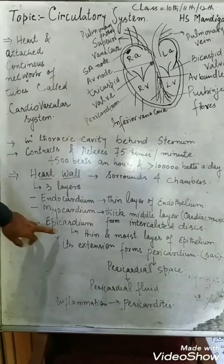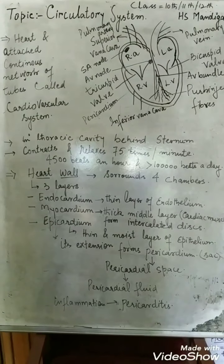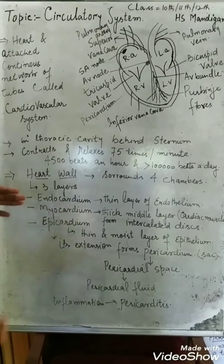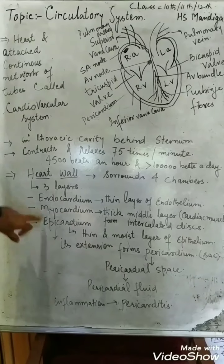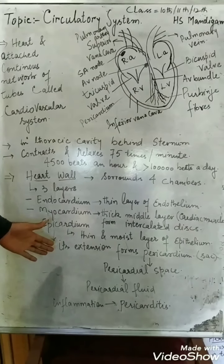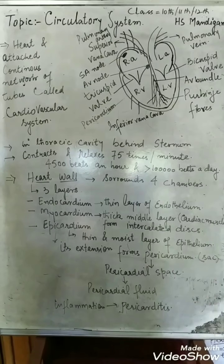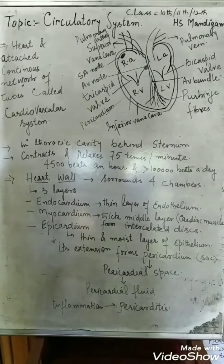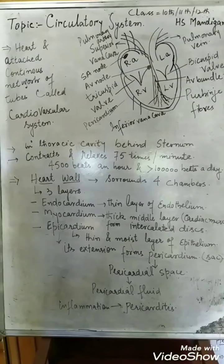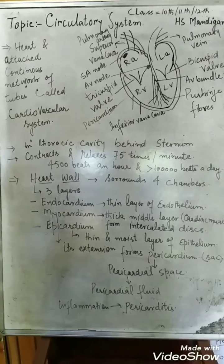The third layer is the epicardium, which is a thin and moist layer of epithelium in tight contact with the myocardium. The epicardium has an extension that forms a sac-like structure around the whole heart called the pericardium. The pericardium protects the heart from mechanical injuries and shocks.